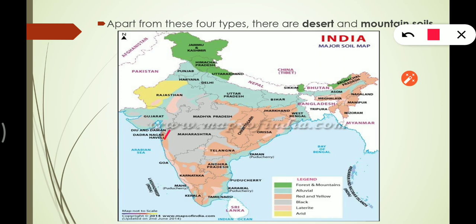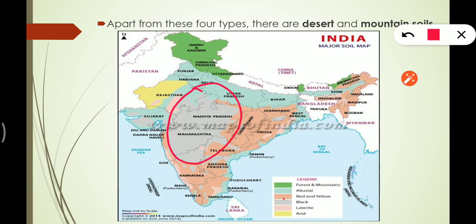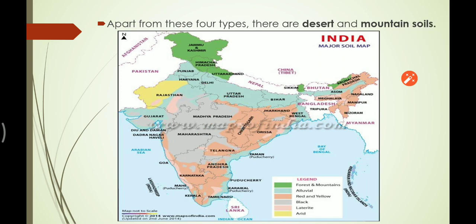Red soil is found in Daman & Diu, Dadra & Nagar Haveli, parts of Karnataka, Andhra Pradesh, Kerala, some parts of Tamil Nadu, Telangana, Chhattisgarh, Odisha, Jharkhand, Meghalaya, Mizoram, Manipur, Nagaland, and more than half of Arunachal Pradesh. Black soil covers a major part of Madhya Pradesh, Maharashtra, Karnataka, and is also found in patches in Jharkhand, Andhra Pradesh, and parts of Telangana.